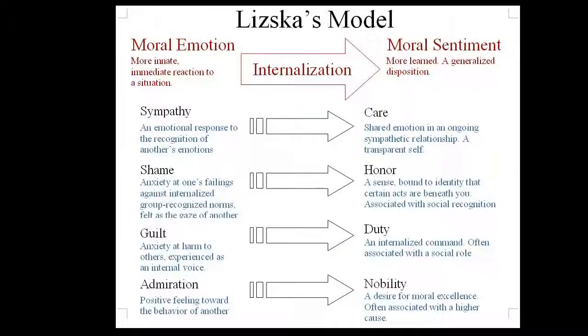The next two moral sentiments evolve out of the moral emotions of shame and guilt. Shame and guilt are closely related moral emotions, and normally we would use those words interchangeably. However, Lischka follows the anthropologist Ruth Benedict in distinguishing between them, and there are a couple of pages in your textbook discussing the difference. Guilt is more bound up in harm to others, while shame involves violating social norms that might change your status in the community. What's important is that these two enforcer emotions evolve into different sentiments once internalized. Shame grows into a sense of honor — the idea that certain acts are simply beneath a person of your status. Guilt grows into a sense of duty, a felt obligation often associated with a social role like being a parent, but not always.